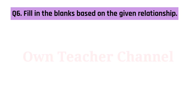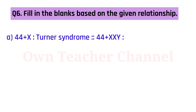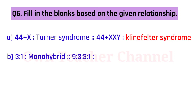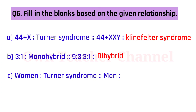Question 6: Fill in the blanks based on the given relationship. 44 plus X corresponds to Turner syndrome; 44 plus XXY corresponds to Klinefelter syndrome. Ratio 3:1 corresponds to monohybrid cross; ratio 9:3:3:1 corresponds to dihybrid cross. Turner syndrome affects women; Klinefelter syndrome affects men.